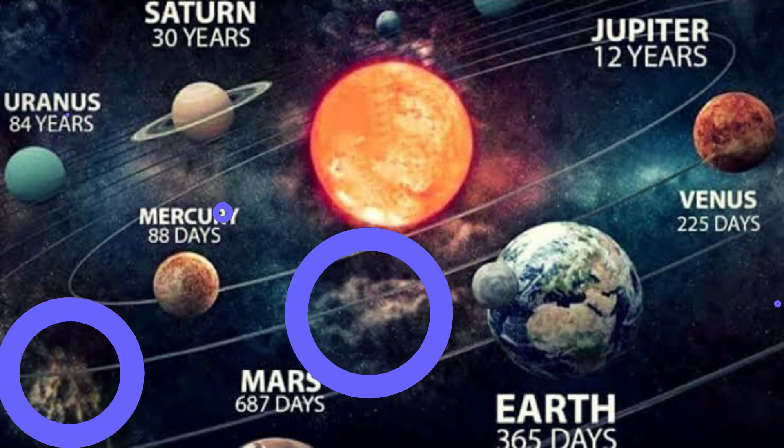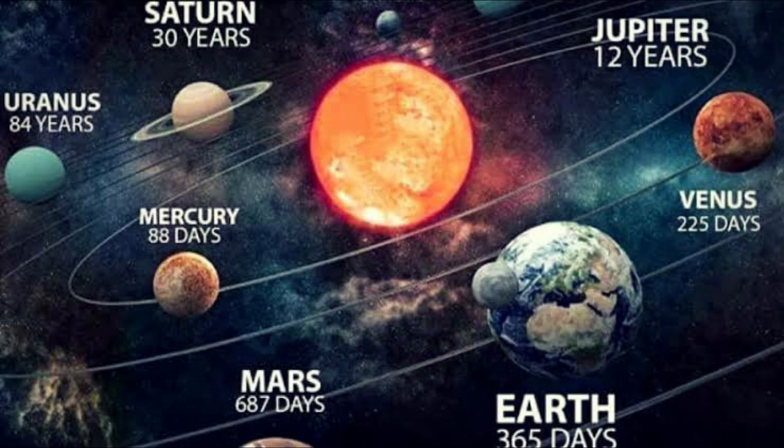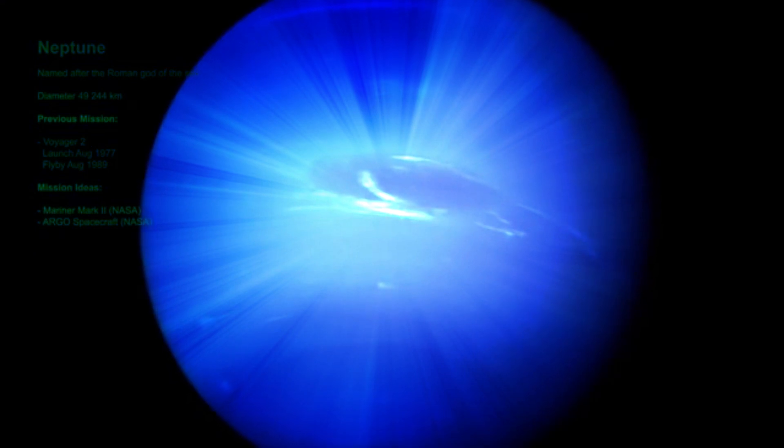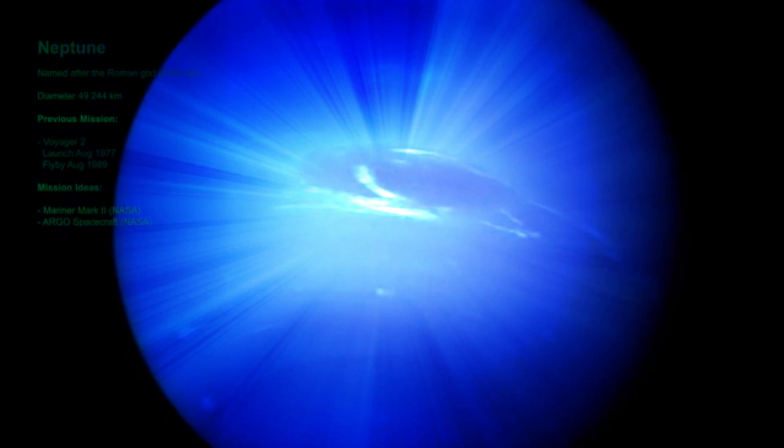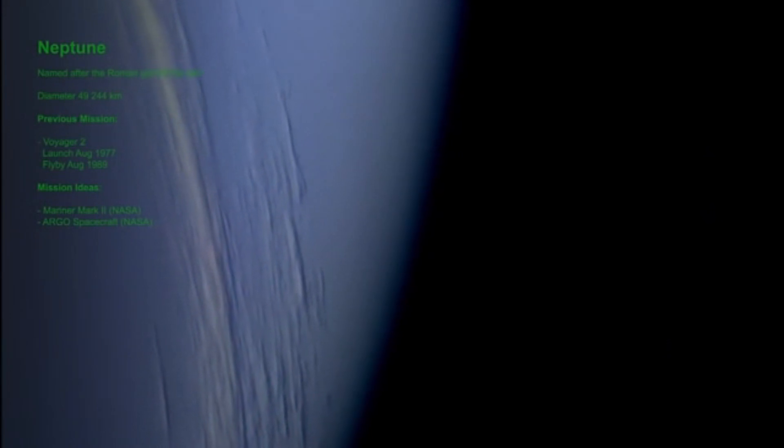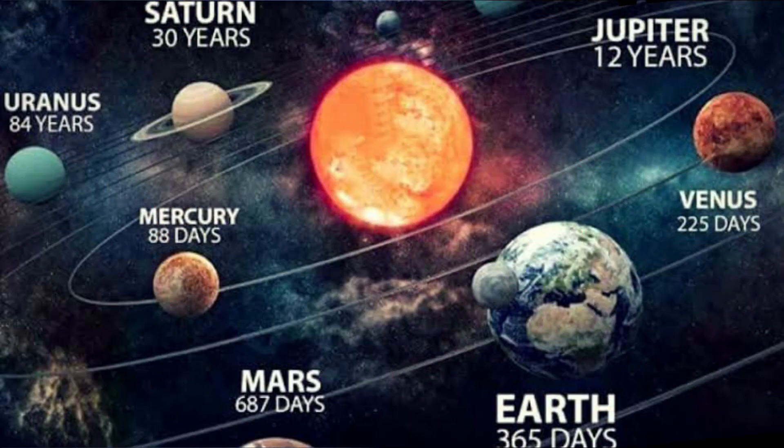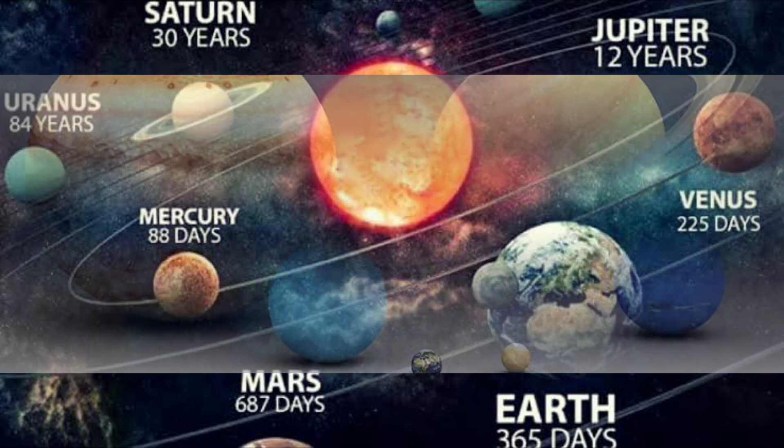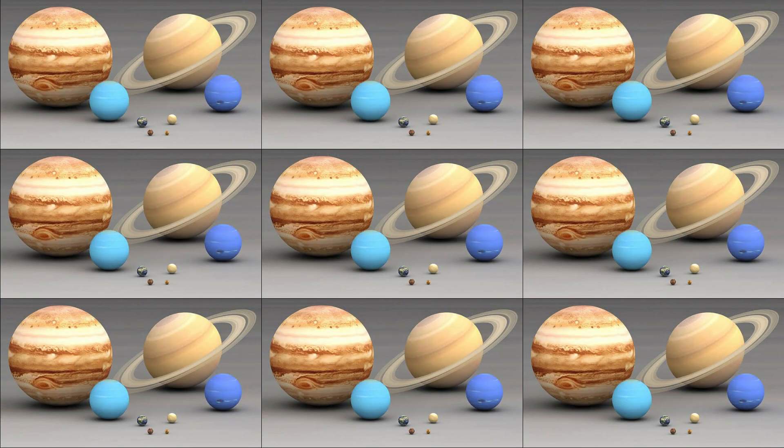Next planet Uranus, it will take 84 years to complete one revolution. And the next planet Neptune, it takes nearly 165 years to complete the revolution. So these are the revolution periods of all the planets. If you come to the size matters, we already discussed that Mercury is the smallest planet and Jupiter is the largest one.